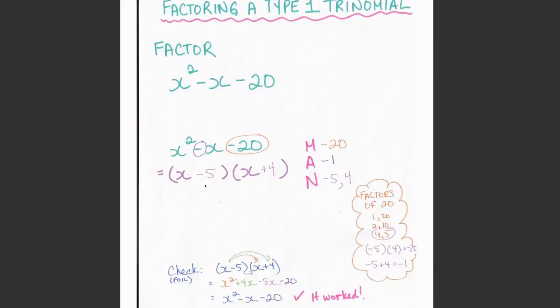I'm going to take those two numbers and put them into my brackets. So my first bracket is going to be (x - 5) and my second bracket is going to be (x + 4).